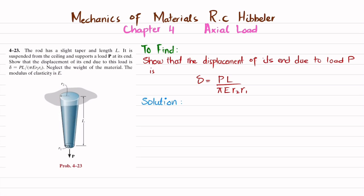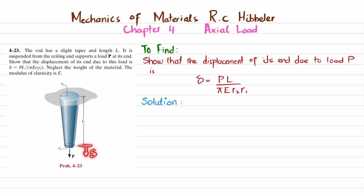You can see this is a tapered rod attached to the ceiling. The largest radius is R2 while the smallest radius is R1. The total length is L and it is subjected to an axial load of P. You have to find the elongation delta, which is equal to P times L divided by pi times E times R2 times R1.